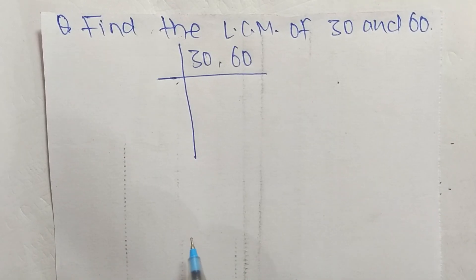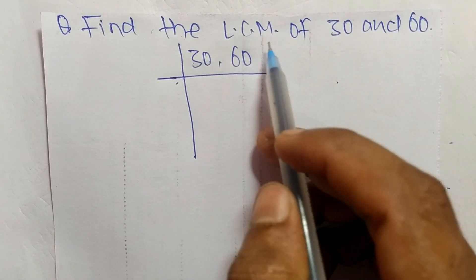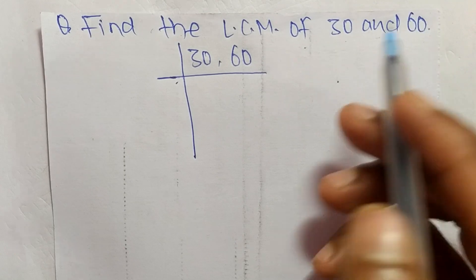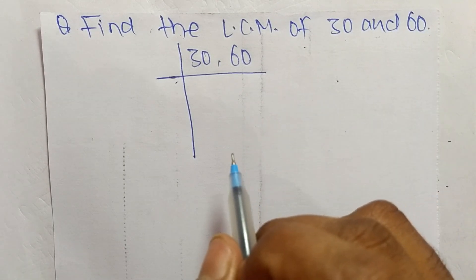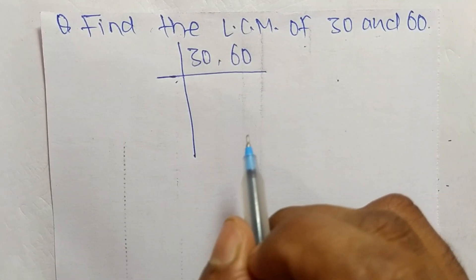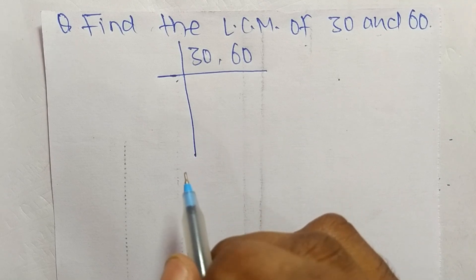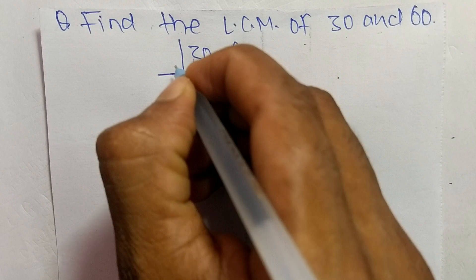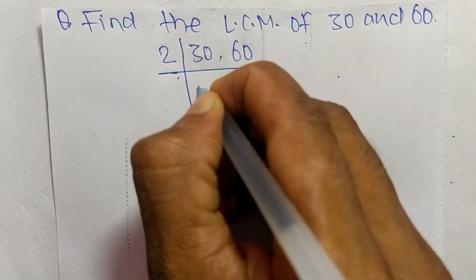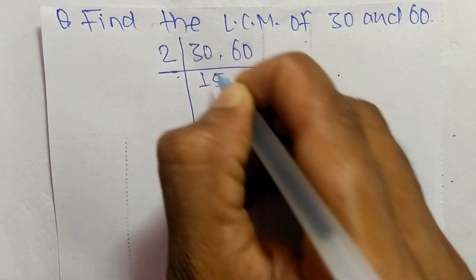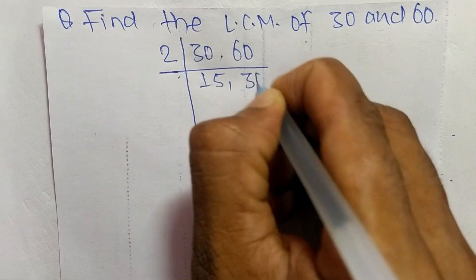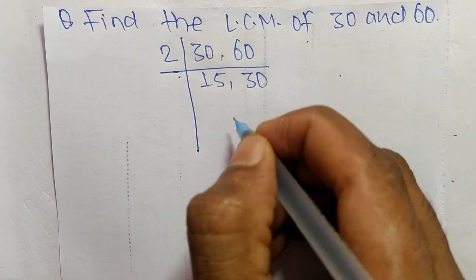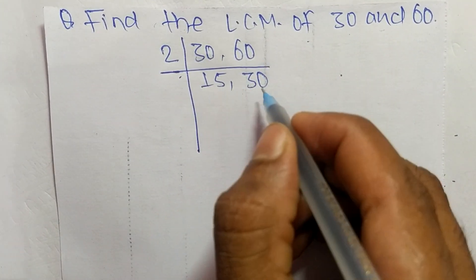Today in this video we shall learn to find the LCM of 30 and 60. To find LCM, first we have to choose the lowest number that can exactly divide 30 and 60. The number is 2. So 2 times 15 equals 30, and 2 times 30 equals 60.